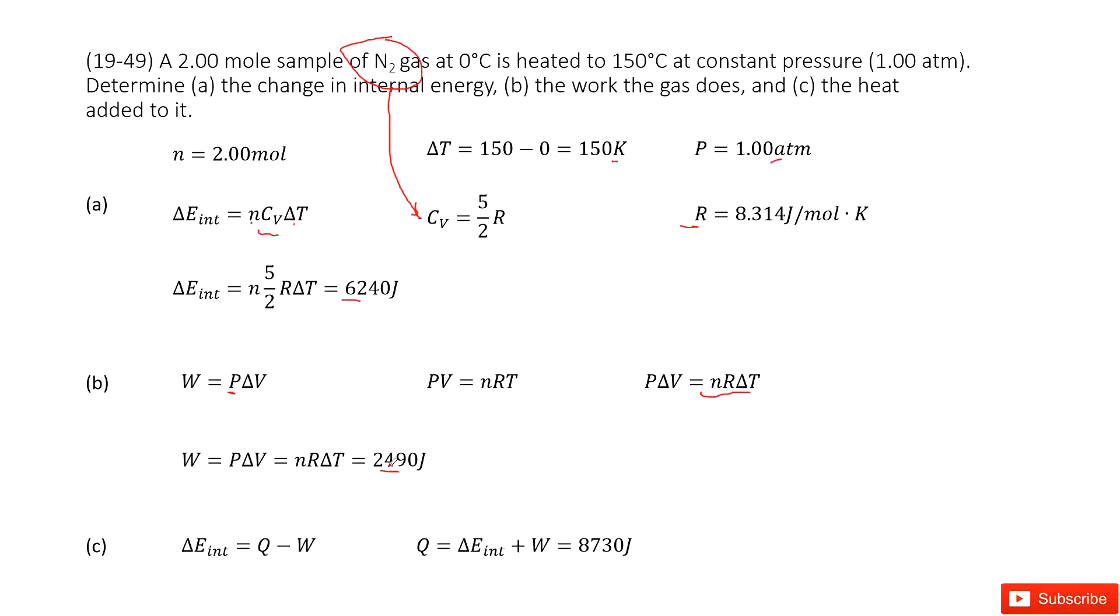Next part, calculate the heat added to it. We need to find Q. The internal energy change equals Q - W. Therefore, Q = ΔE_int + W. This part is given by (a), and the work is given by (b). Input these two numbers to get the answer.